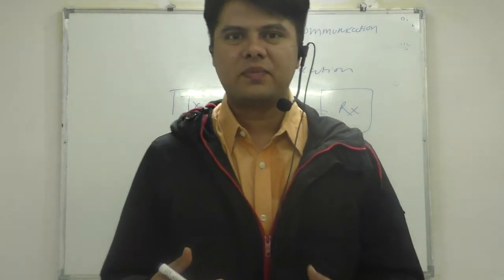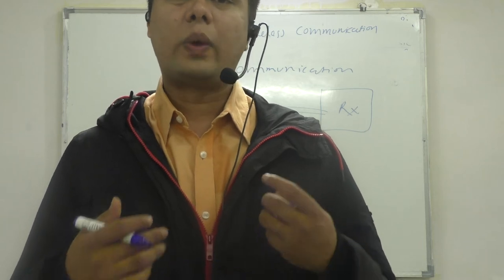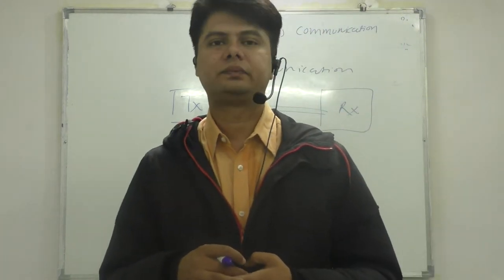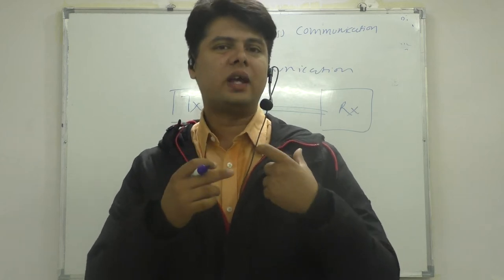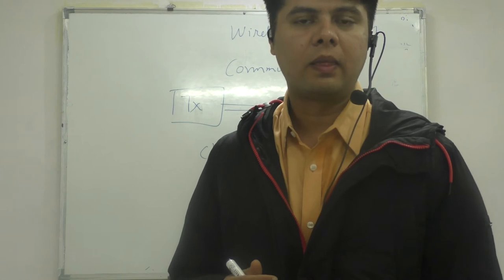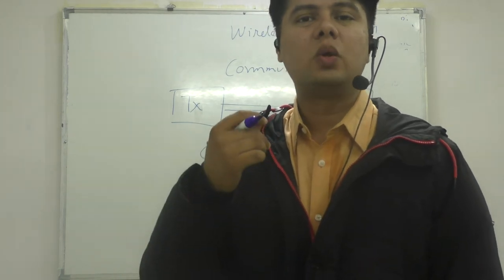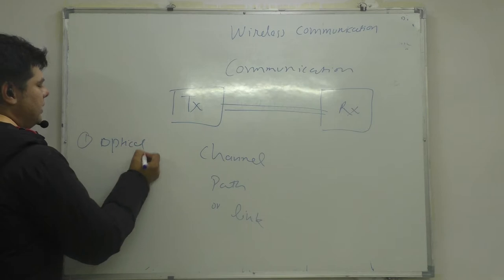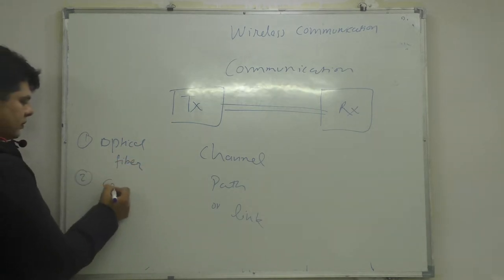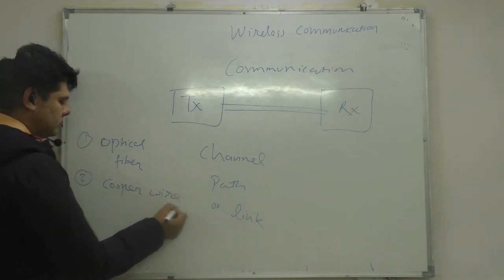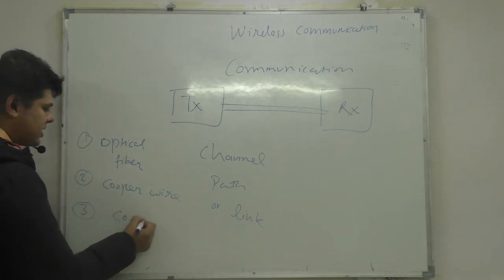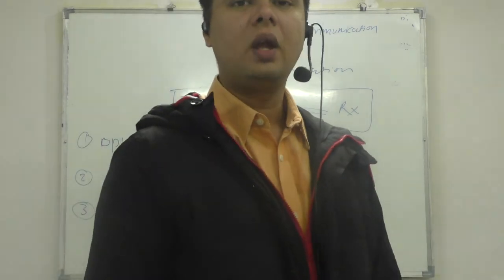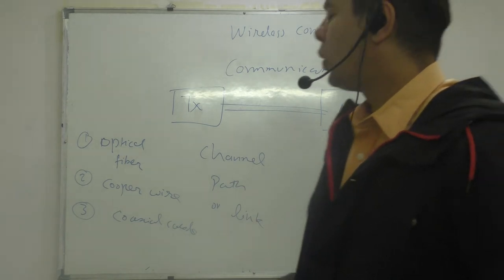If the system is wired, it is using some physical media. Physical media means we can touch it. Examples include: first, optical fiber; second, copper wire; and third, coaxial cable. These are some examples of wired media.